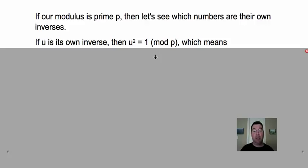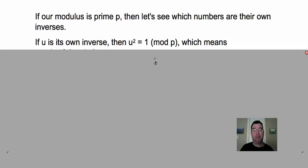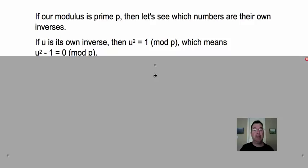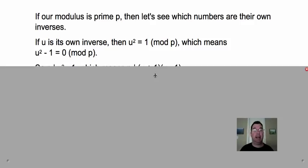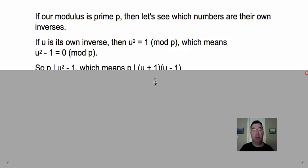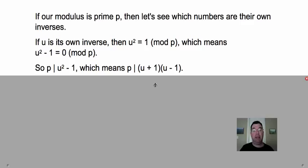So if u is its own inverse, then if I square it or multiply it by itself, I'm going to get one modulo p. That means if I subtract one from each side, I get that u² - 1 = 0 (mod p). And if something equals zero mod p, that means that p divides it, p is a factor of it. So if p is a factor of u² - 1, or if p divides u² - 1, that means I can factor u² - 1.